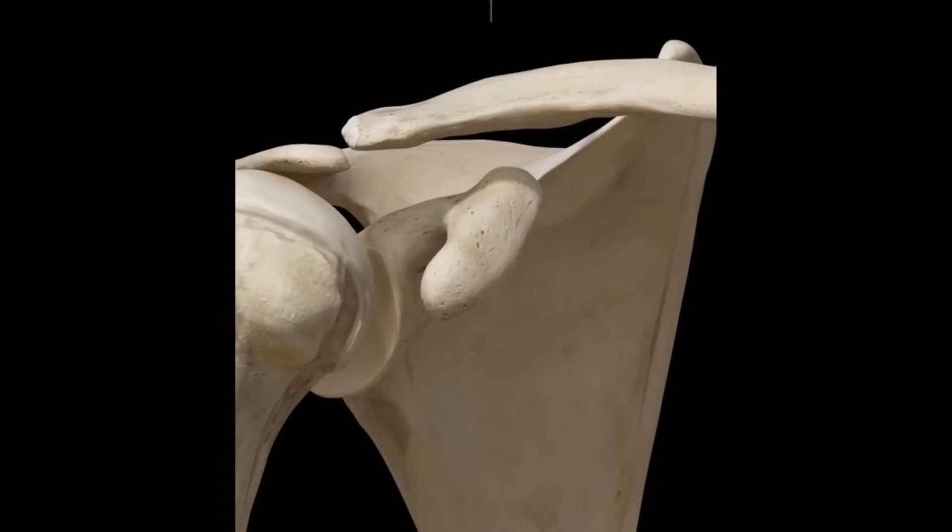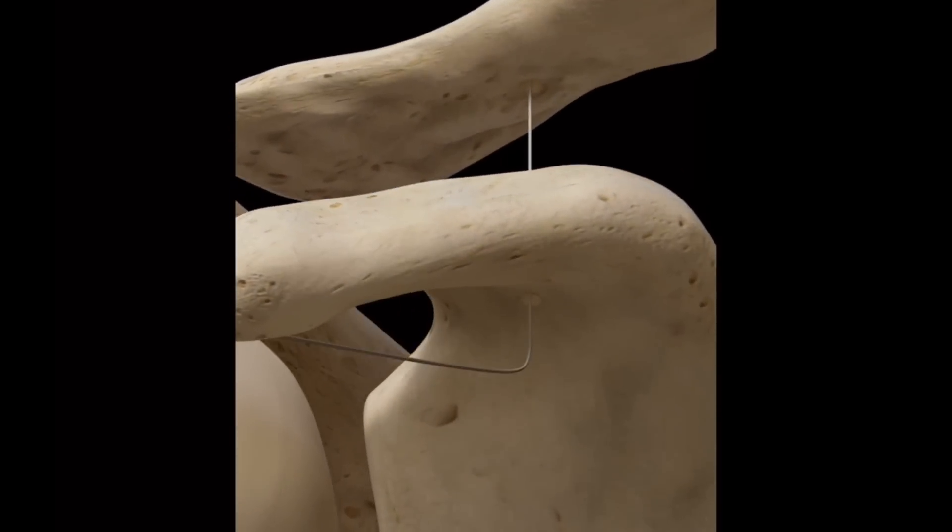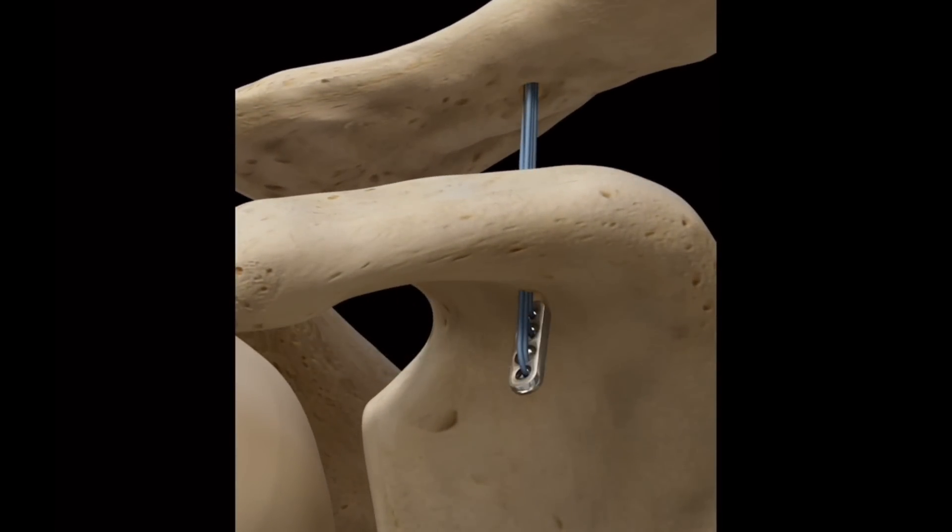With a grade 3 injury, the season is likely over for the player, as the damage done to the region would require surgical treatment to stabilize the scapula, as all of the supportive ligaments have been torn.